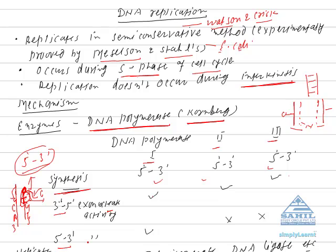One more activity is called 5'-3' exonuclease activity. Why is this activity required? For DNA synthesis, a primer is always required, and the primer is an RNA primer. DNA polymerase can only elongate a new chain — it cannot start DNA synthesis. So the starting point for DNA synthesis is the RNA primer.